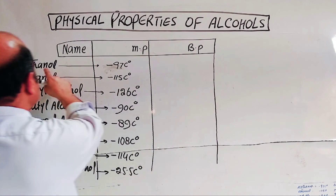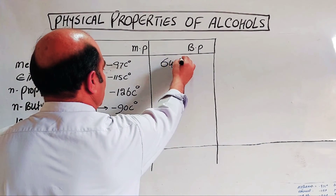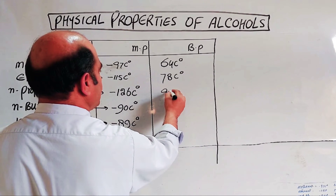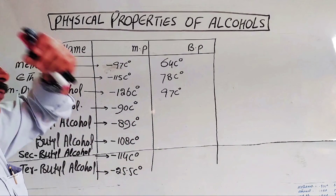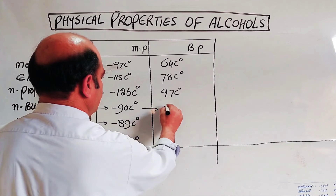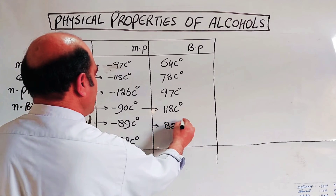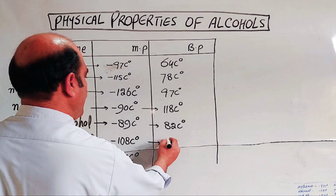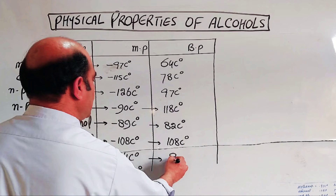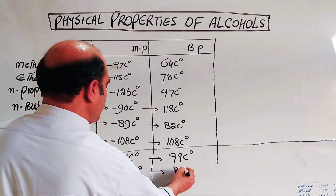The boiling point values from the table are: methanol 64°C, ethanol 78°C, propanol 97°C, n-butanol 180°C, isopropyl 82°C, 108°C, secondary butyl 99°C, and tertiary butyl 82°C.